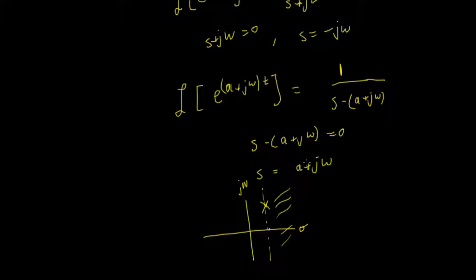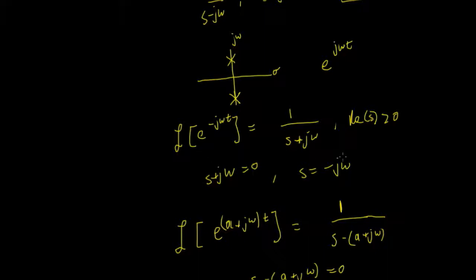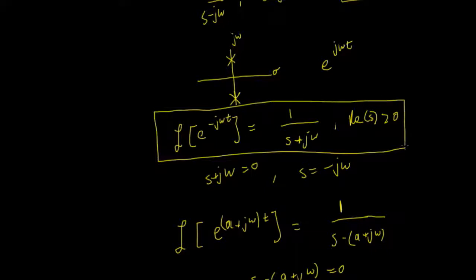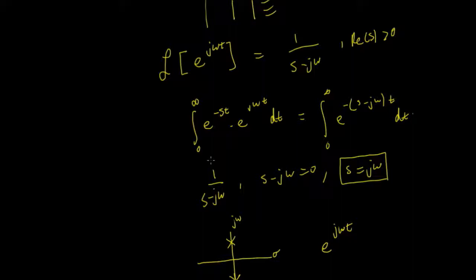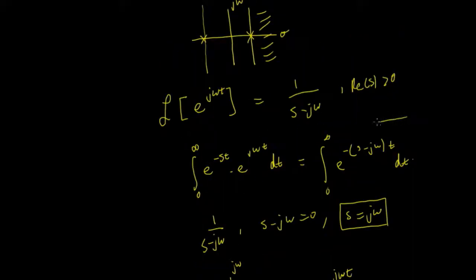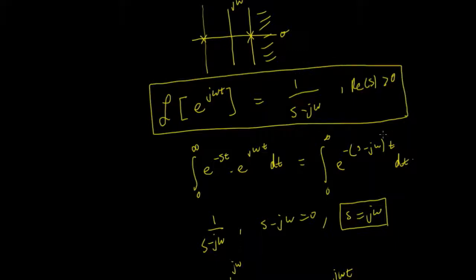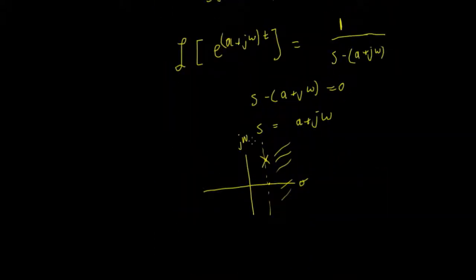Since a could be positive or negative and omega could be positive or negative, we can position the pole anywhere along the positive or negative sigma axis and anywhere along the positive or negative j omega axis. We've got a method of providing a pole at any point in this complex plane, including the origin when j omega equals zero and a equals zero. We also have a couple of transform pairs visible here.